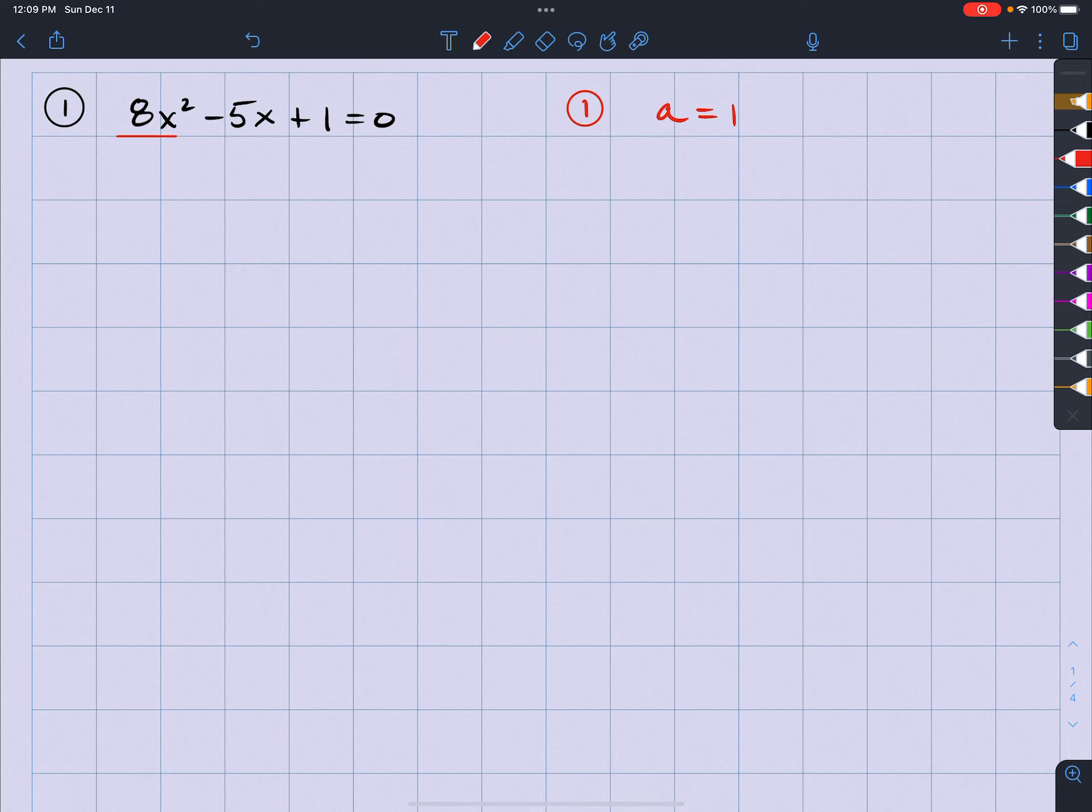In order to do that, we're going to divide every single term, which includes the other side as well, because if we divide the left side by 8, we have to divide the right side by 8. So what we're going to get is x squared minus 5 eighths x plus 1 eighth equals 0. Yes, there are fractions. It's okay.